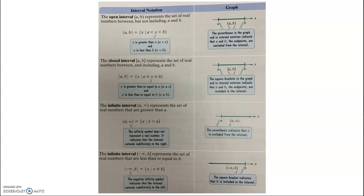With an open interval, you cannot include A and B in your answer. You've also got a closed interval, which means yes, you can equal A and B. And you've got infinite intervals going either way — from negative infinity to a number, or from a number to positive infinity.